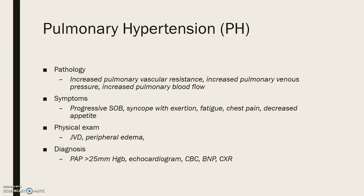Pulmonary hypertension is defined as a mean arterial pressure greater than 25 mmHg at rest. The gold standard for diagnosis is right heart catheterization. An RA pressure greater than 20 equals a poor prognosis.